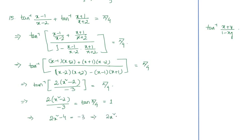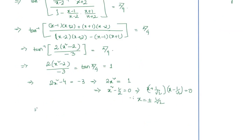This gives 2x² = 1, so x² = 1/2, meaning x² − 1/2 = 0. Factoring: (x + 1/√2)(x − 1/√2) = 0. Therefore x = ±1/√2. Hence the solution is x = ±1/√2, and both values are accepted, as you can cross-check.